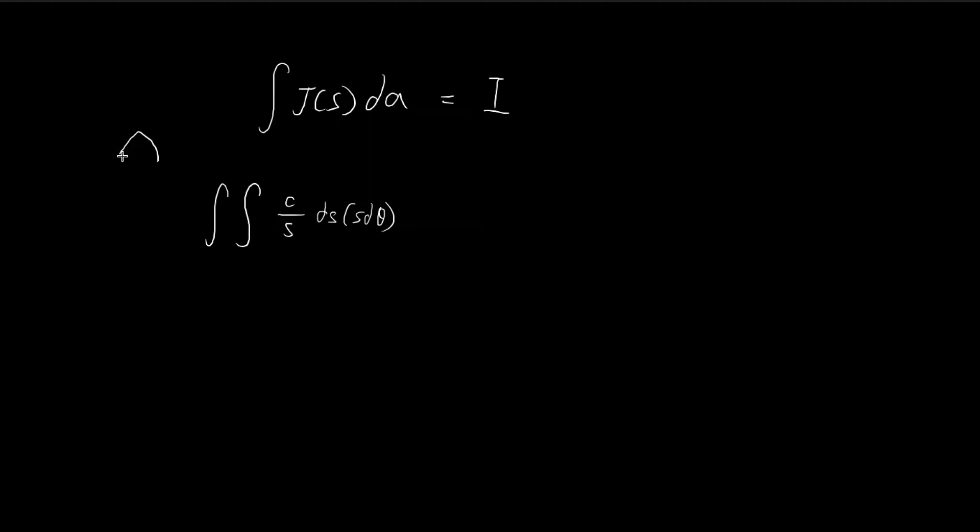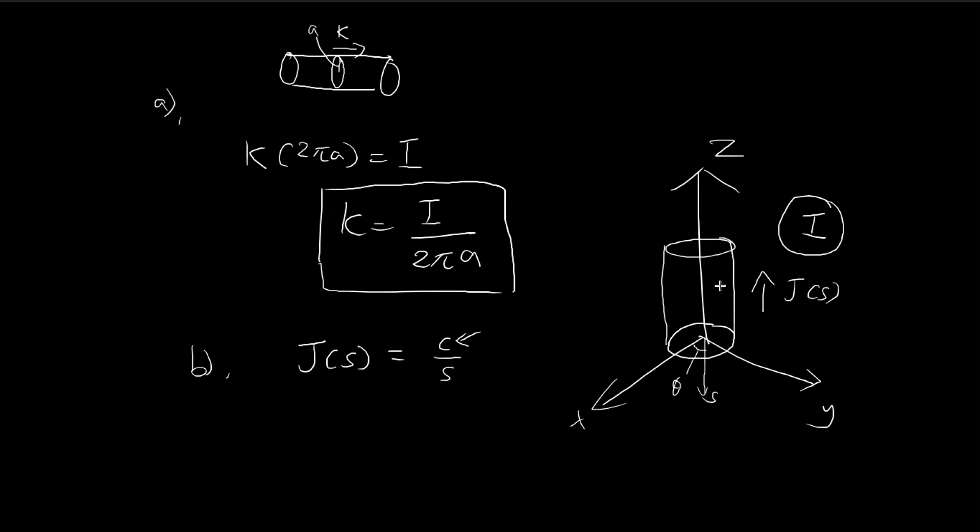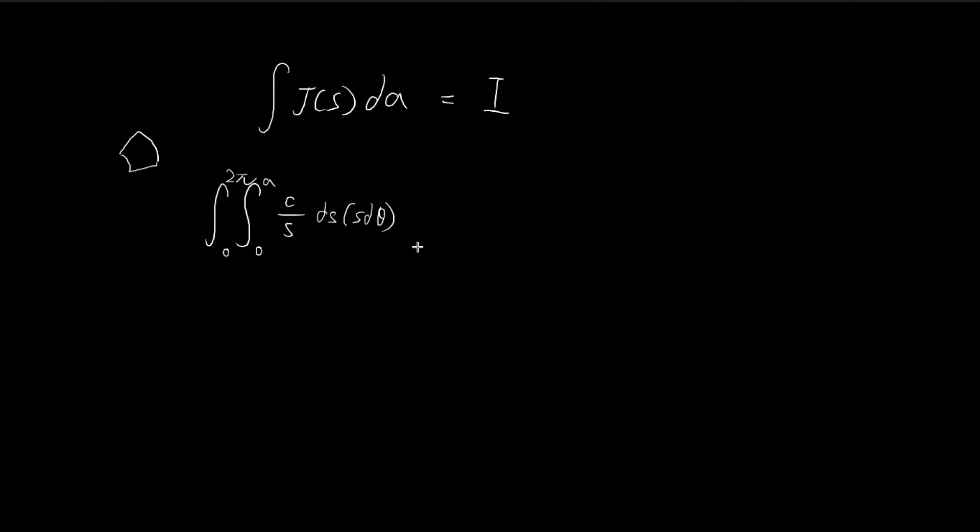So dS, that's going to go from 0 to A. A is the radius of the circle. Theta is going to go from 0 to 2π. So essentially, it draws out the circle. So we're going to integrate along the circle. So once we do that, that's going to be equal to I. And you see that S, they cancel out. And essentially, we have a rather simple integral.